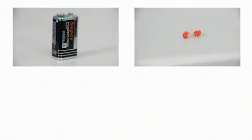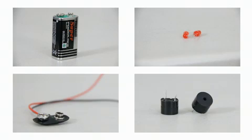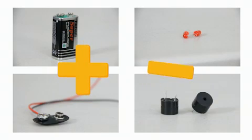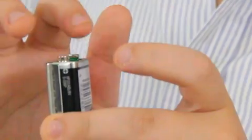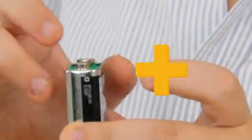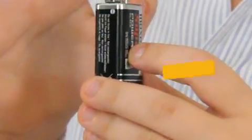On the battery, LED, buzzer, and battery clip, there are positive and negative sides. On the battery, the positive side is labeled with a plus and on the negative side, it's labeled with a minus.